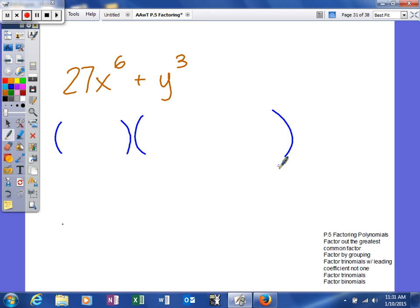Again, binomial times the trinomial. The steps are the same. Take the cube root of the first term, 3x squared. Take the cube root of the second term, sign included. So the cube root of positive y cubed is positive y. That's how you get the two terms in your binomial.